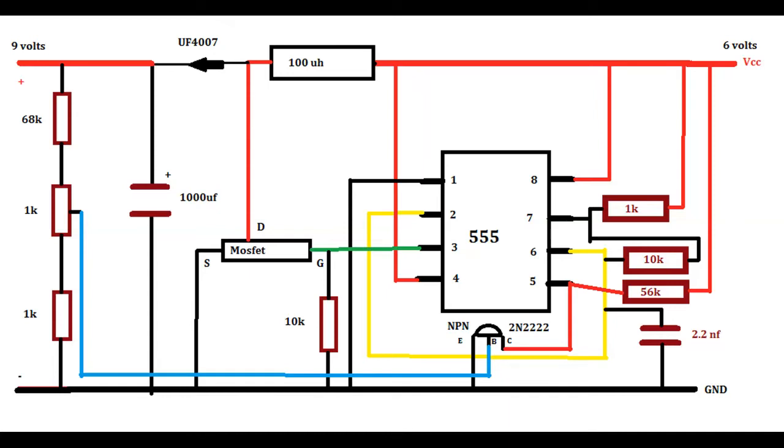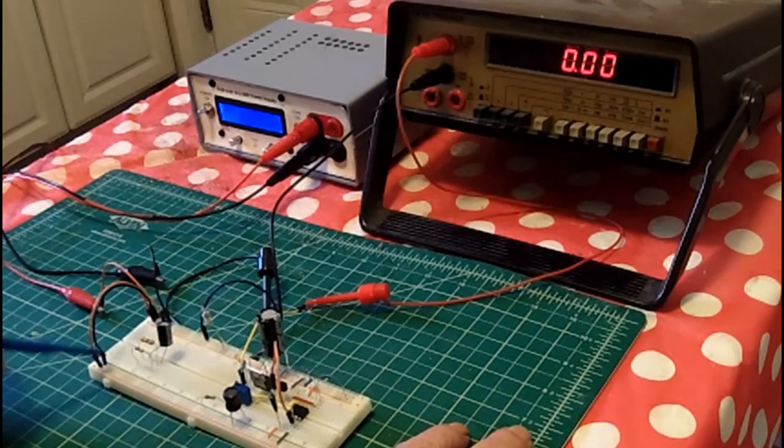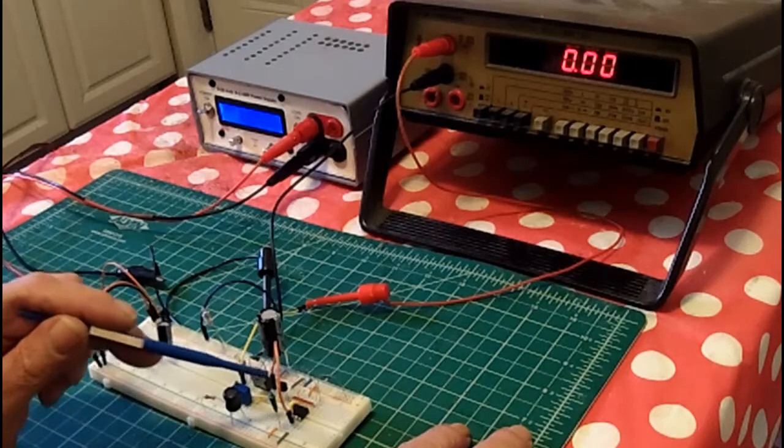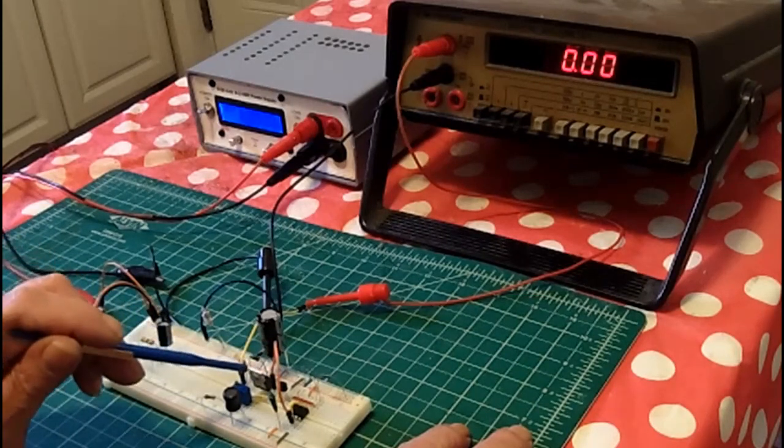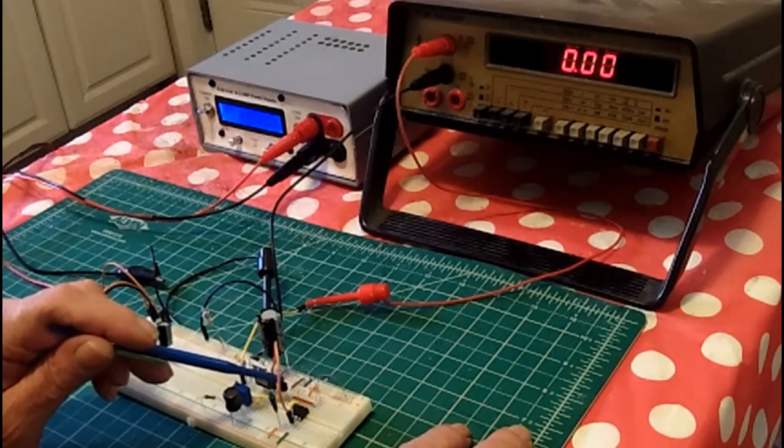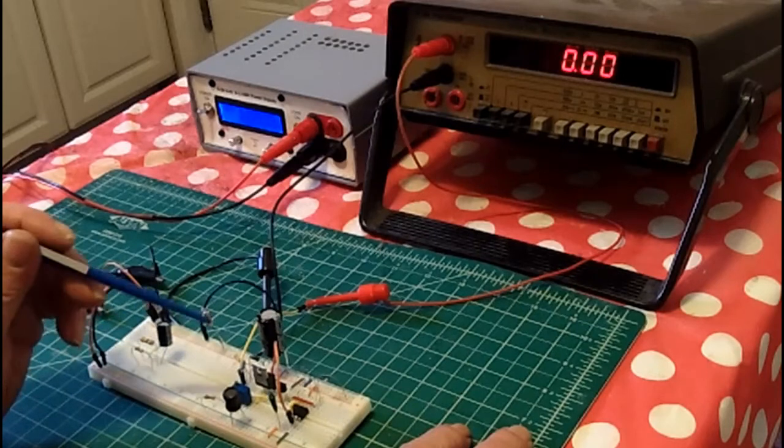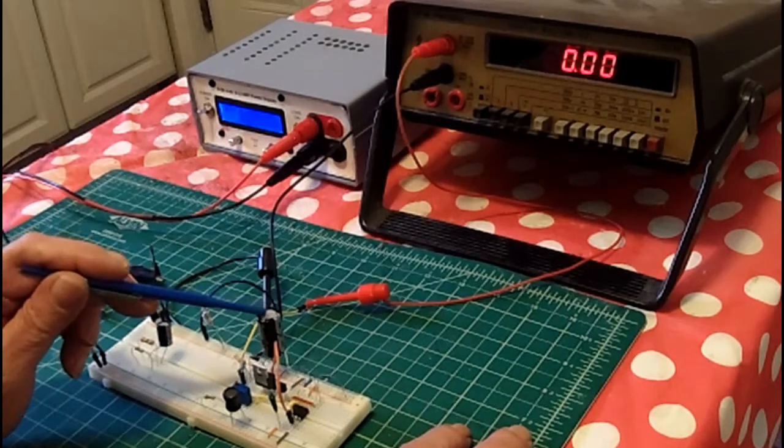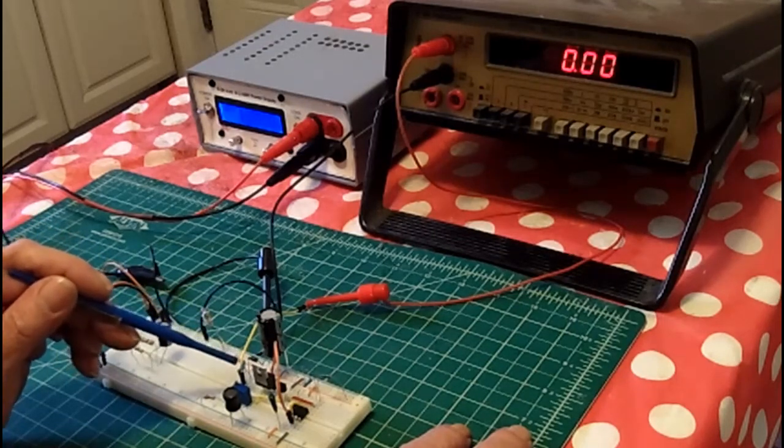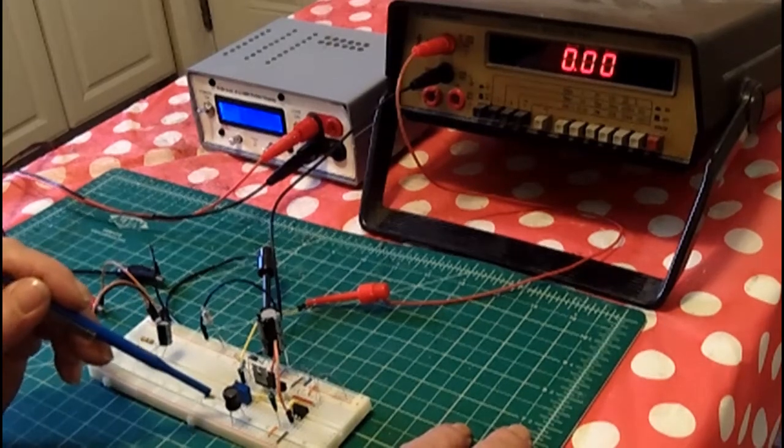Okay, here's our circuit on our breadboard. You have our 555 here with its timing components. Here's our MOSFET and our inductor. Here's our regulator, the 2N2222, our capacitor, our diode, and here's our feedback circuit: our 68k, our 1k pot, and our 1k resistor.